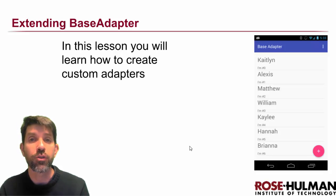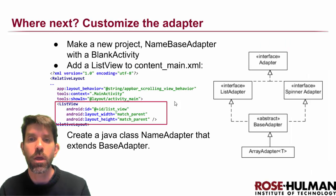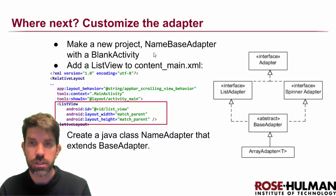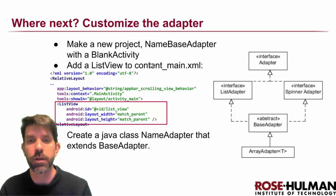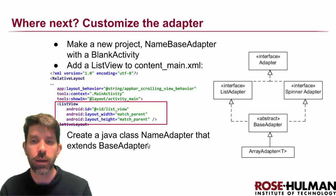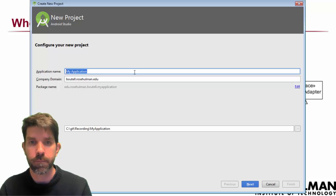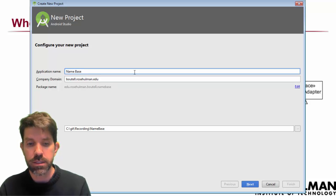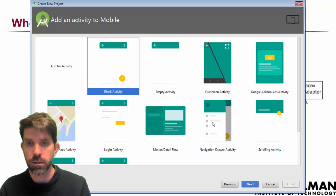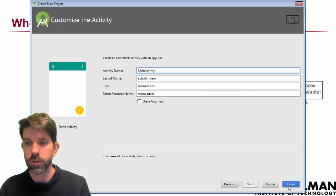In this lesson we're going to learn how to create custom adapters by extending the base adapter class. We want to make a new project called 'Name Base Adapter' and we'll put in a blank activity so we get the floating action button. Bringing up Android Studio, new project, calling this 'Name Base Adapter' with defaults for everything else.